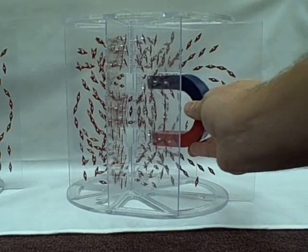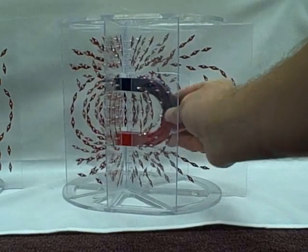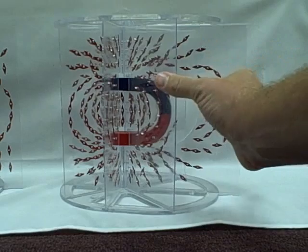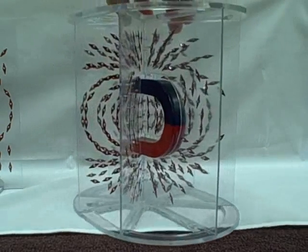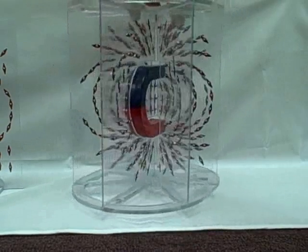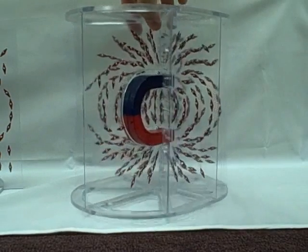You slide the magnet, the horseshoe magnet, right in like this. Slide the removable panel back in and you can see the magnetic lines of force are very visible. It's quite a neat demonstration.